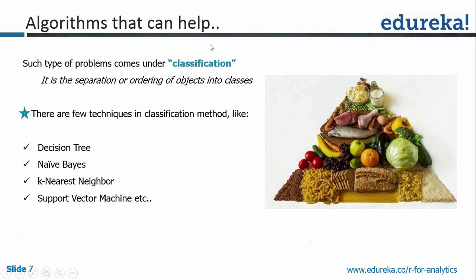It's a classification problem — I'm going to segregate and classify. What techniques can you use? We can use decision trees, Naive Bayes classifier, KNN (K-nearest neighbors) — not K-means, which is part of clustering and unsupervised learning — and Support Vector Machine (SVM). There are many other options, but let us look primarily at these four and see which one best suits us.